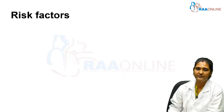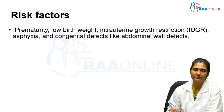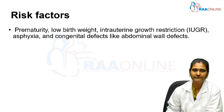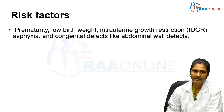Moving on to risk factors — what makes neonates more prone to lower body temperature. First and foremost is prematurity: preterm babies have a higher body surface area-to-mass ratio, leading to greater heat loss. Similarly, low birth weight, IUGR (intrauterine growth restricted) babies, asphyxia, and congenital defects such as abdominal wall defects all increase the risk of hypothermia.